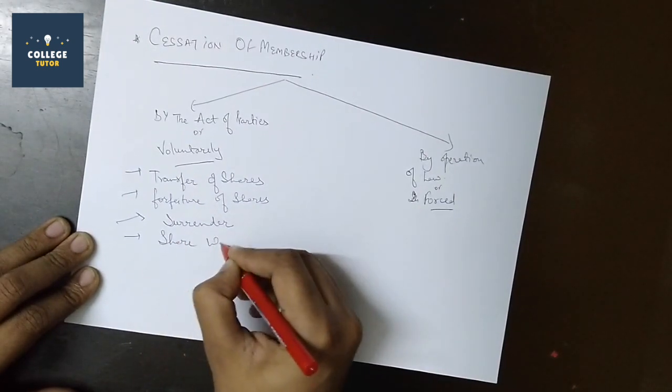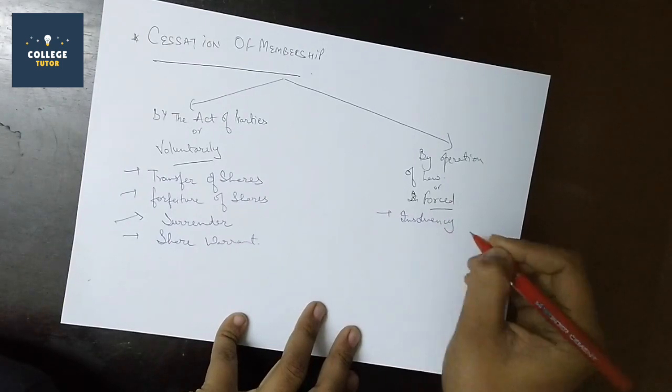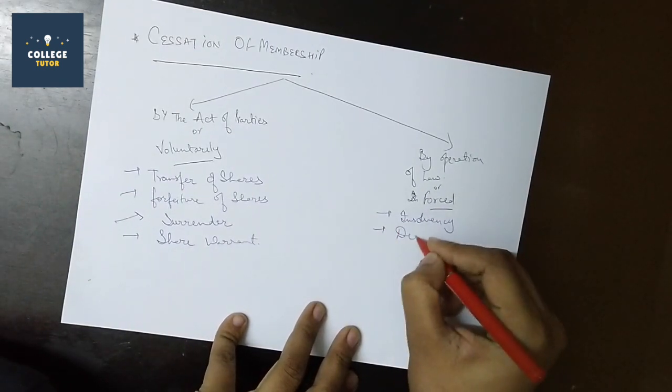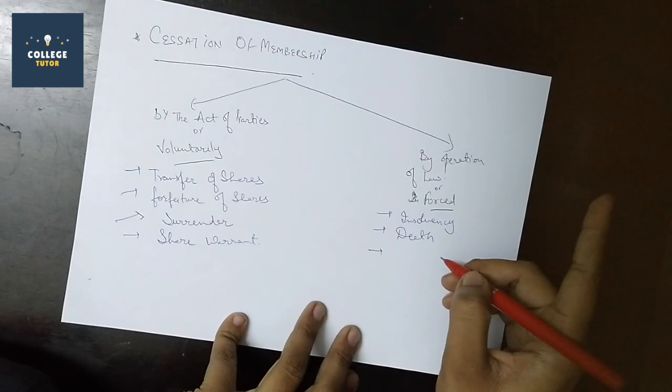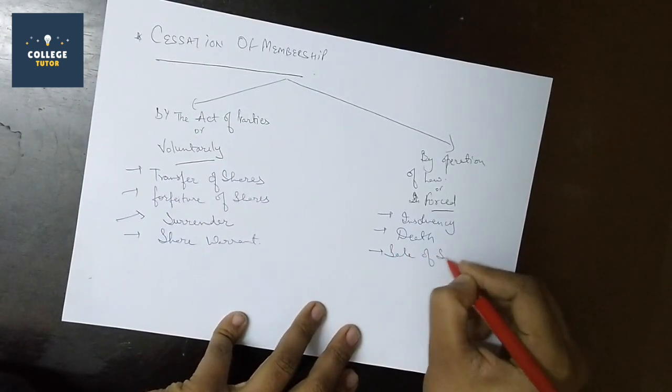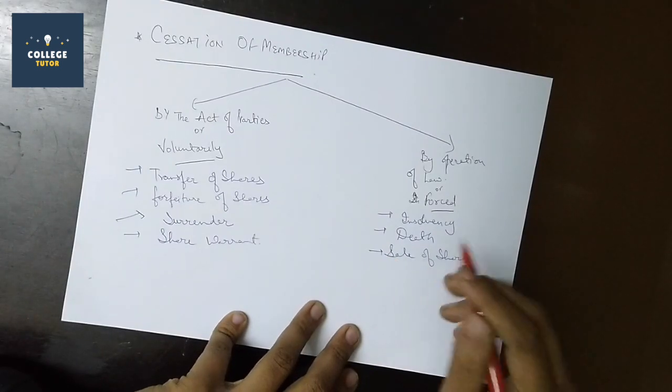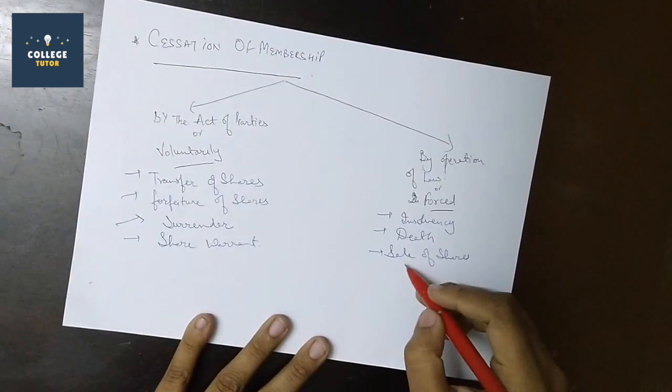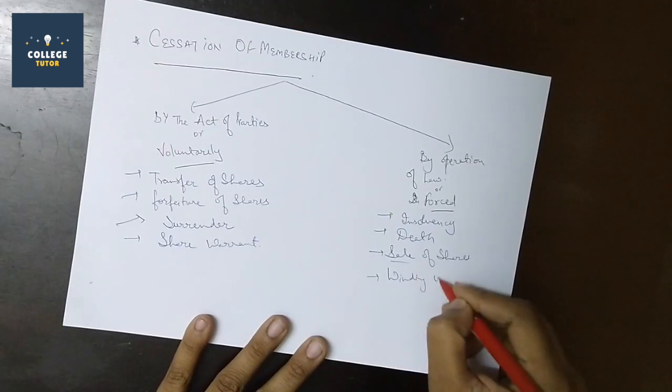Now operation of law methods. Death of a member ends membership. Insolvency also ends membership. Sale of shares by court order for various reasons can end membership. Special order by the court. And finally, winding up of the company ends all memberships.